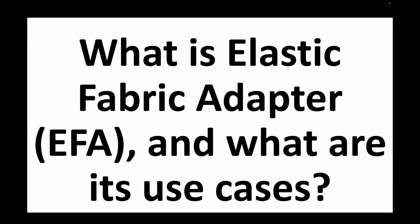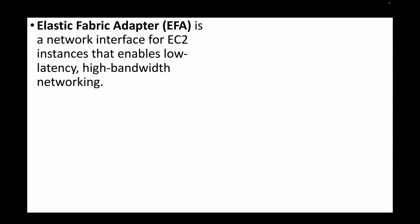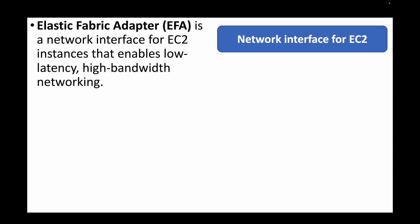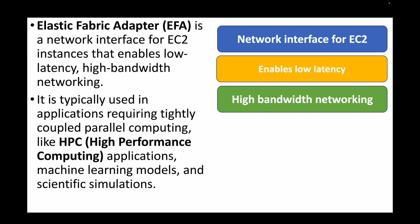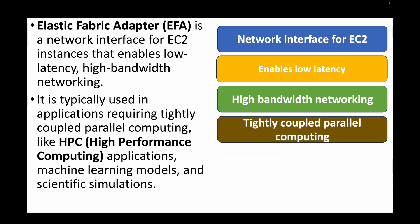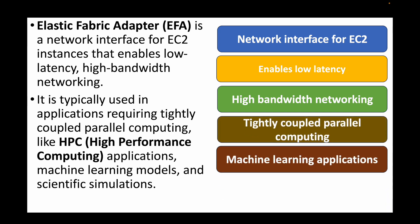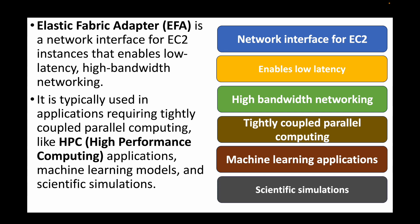The next question is: what is the Elastic Fabric Adapter and what are its use cases? The Elastic Fabric Adapter (EFA) is a network interface available for EC2 instances that provides low latency and high bandwidth networking capabilities. It is typically used in applications that require higher network performance, such as parallel computing, high-performance computing applications like machine learning, or scientific simulations.